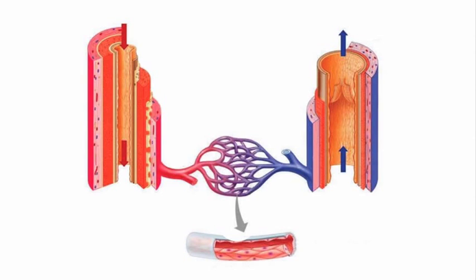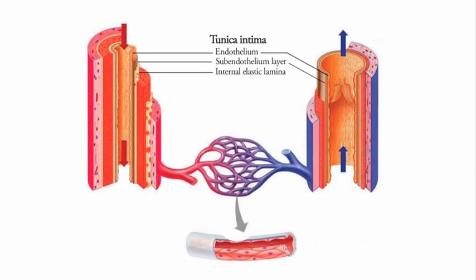As you recall, arteries and veins have three primary tissue layers: the tunica intima, media, and adventitia. The innermost layer, the tunica intima, is made of a one-cell thick layer of endothelial cells and a subendothelial layer of connective tissue, which is supported by an internal elastic lamina.